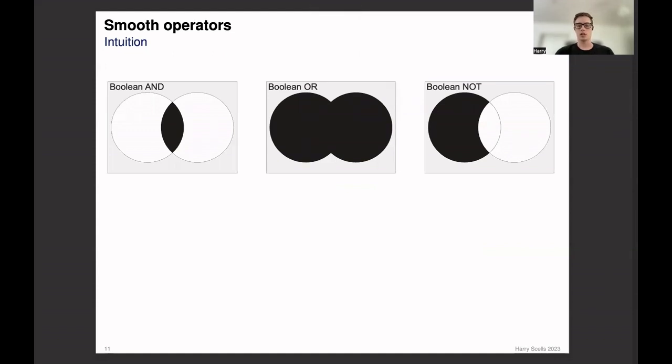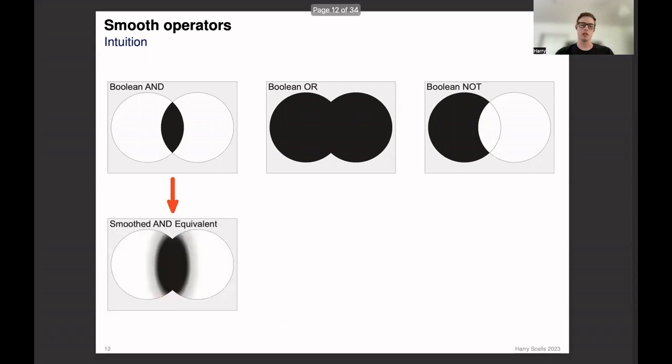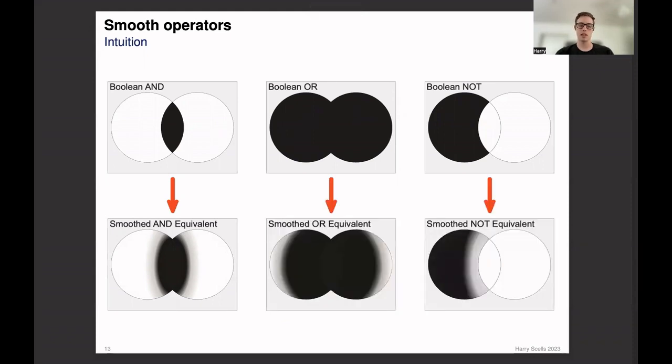Like those expert searchers, I'm sure we all have some intuitive understanding of how Boolean operators work. It's mostly about controlling the result set size. For example, the AND operator restricts documents to those that contain all the query terms. A smooth operator variant allows us to relax this constraint and increase the set of studies being retrieved. And as it turns out, this relaxing operation can be applied to other Boolean operators to achieve a similar effect.